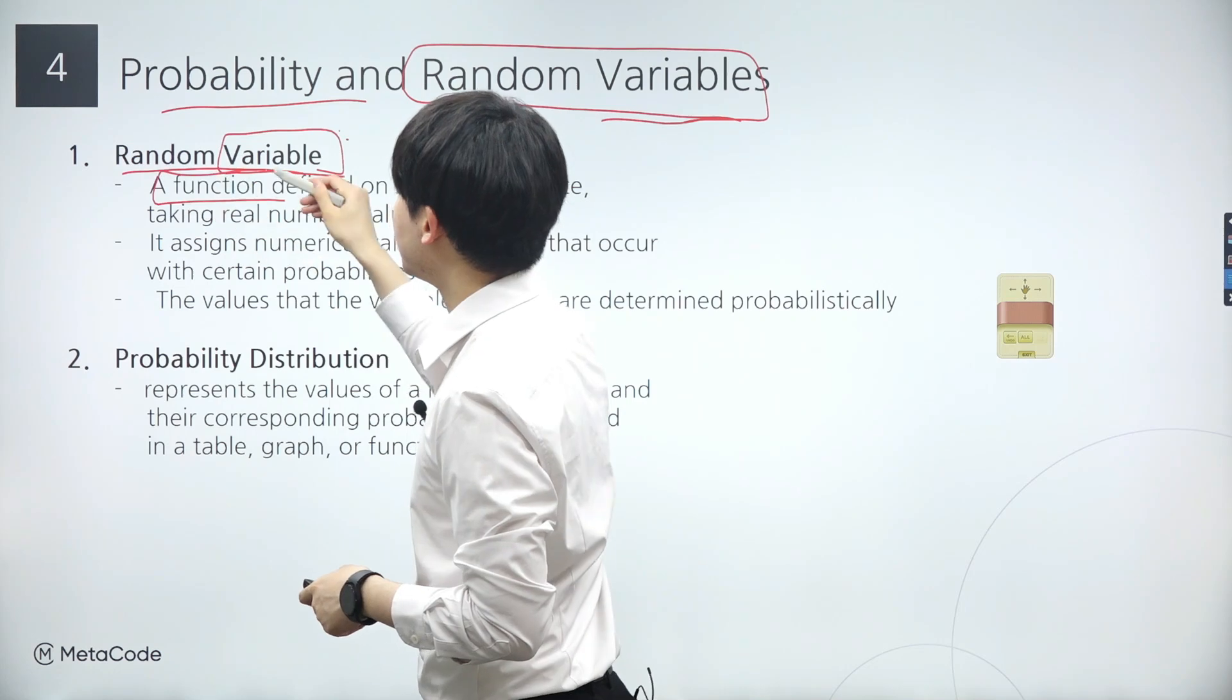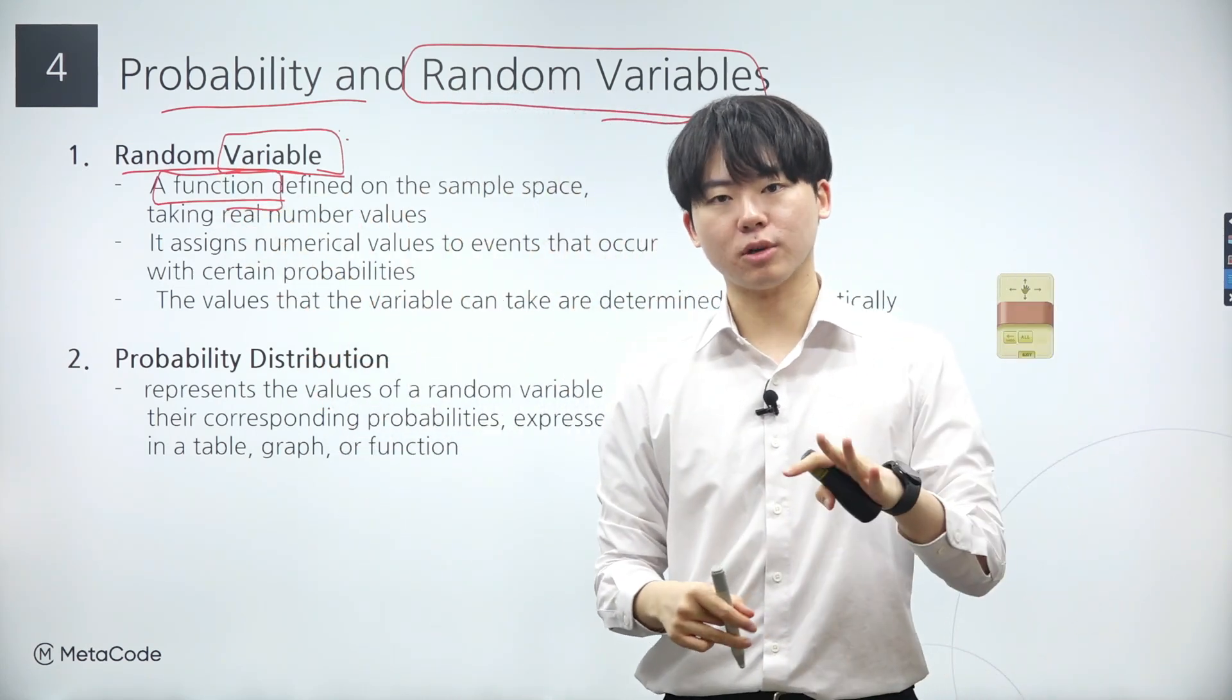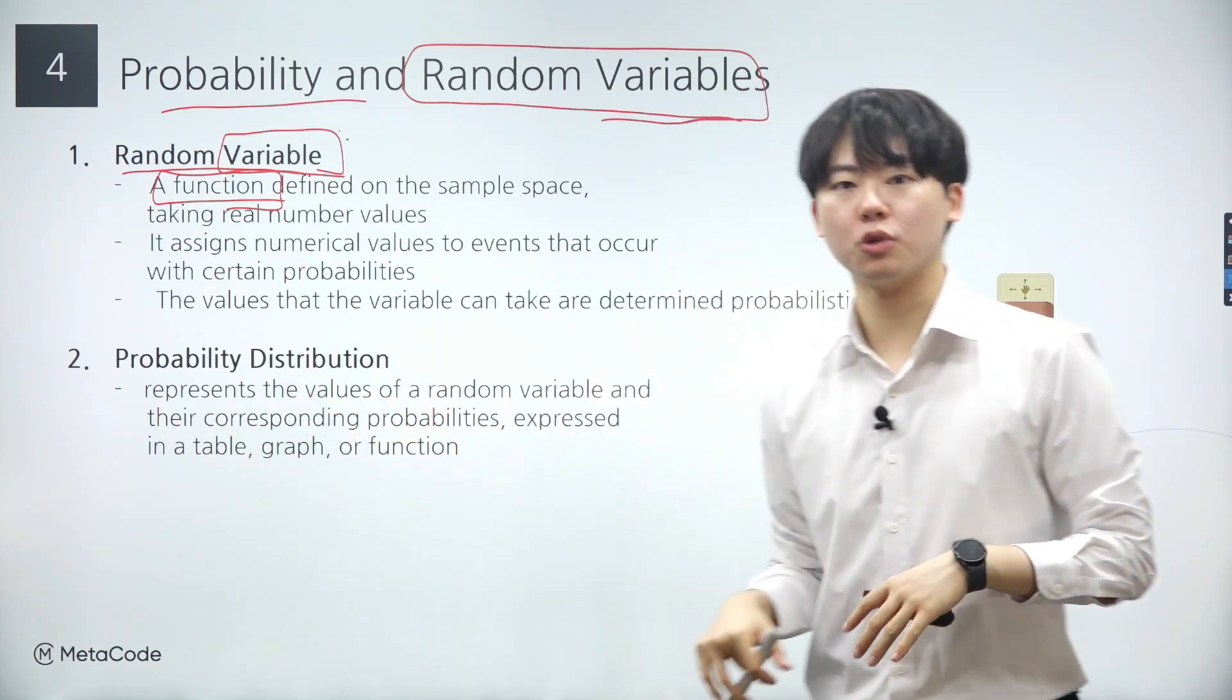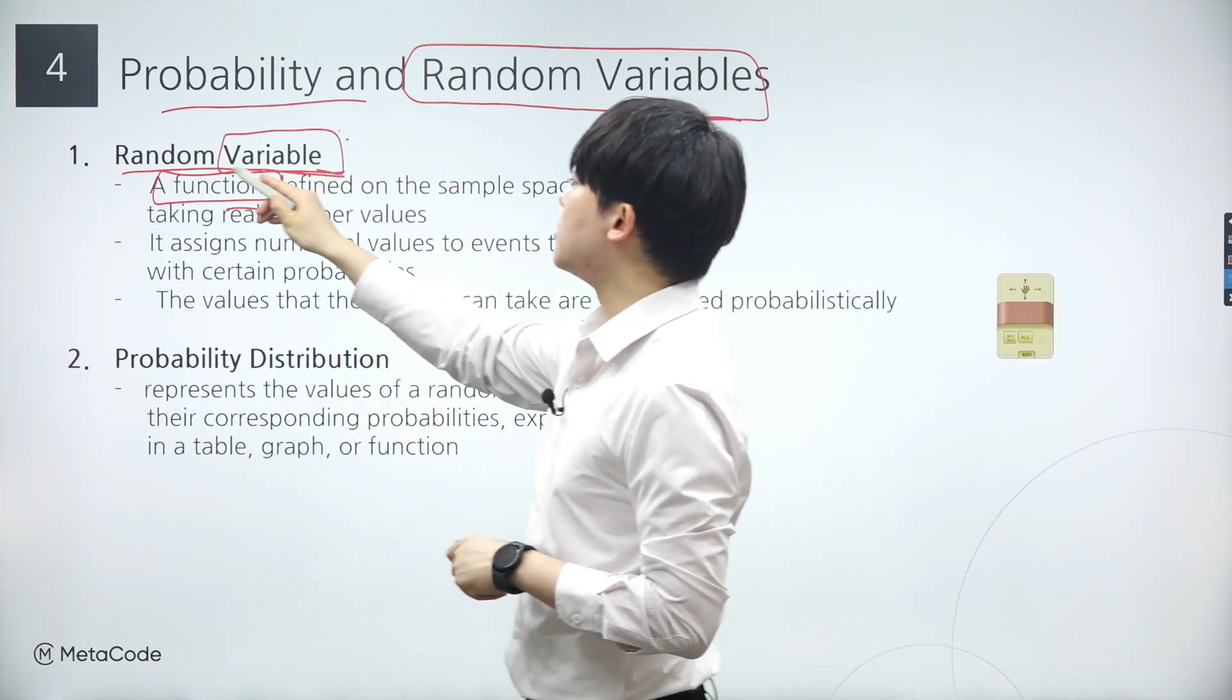So what exactly is a function? Simply put, a function takes an input and gives you a corresponding output. Similarly, a random variable takes an input and gives back an output.